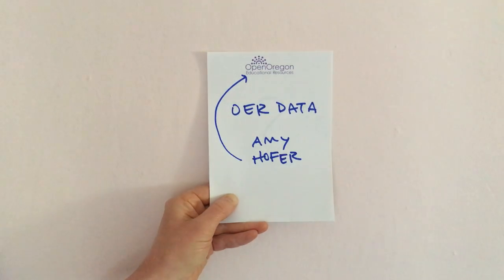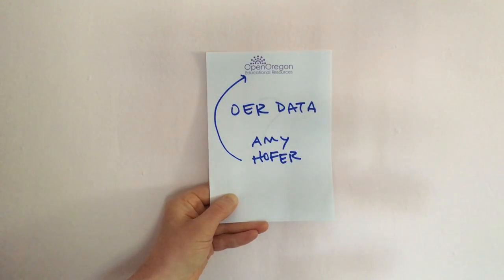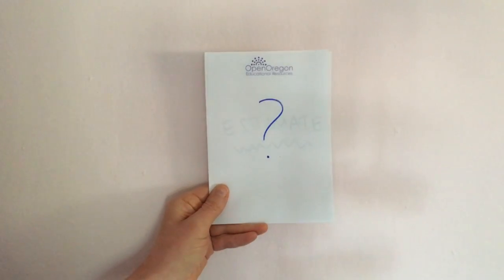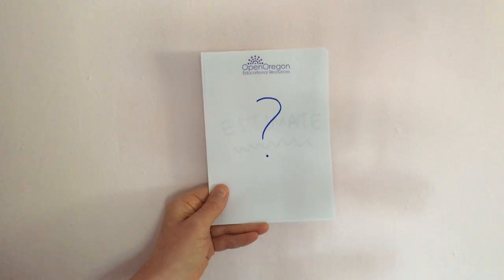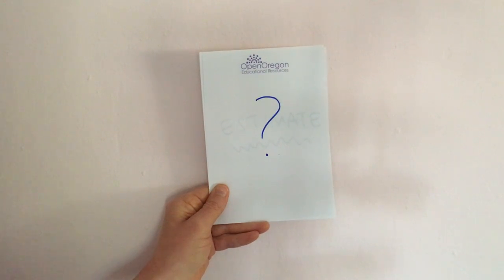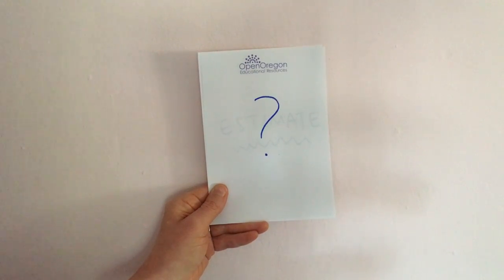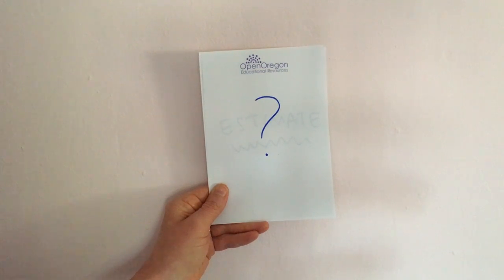Hi, this is Amy Hoffer with Open Oregon Educational Resources, and I'm going to do a breakout session on how we collect and report on OER data. People sometimes ask me, since there are 24 colleges and universities in Oregon, whether we do a consistent method of calculating student savings represented by the no-cost and low-cost designation in the schedule — and the answer is no. Everybody sends me a different kind of fruit and I make a fruit salad out of that.